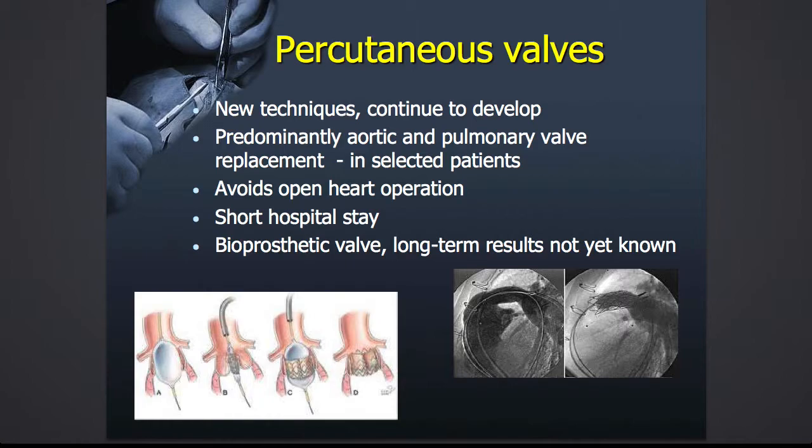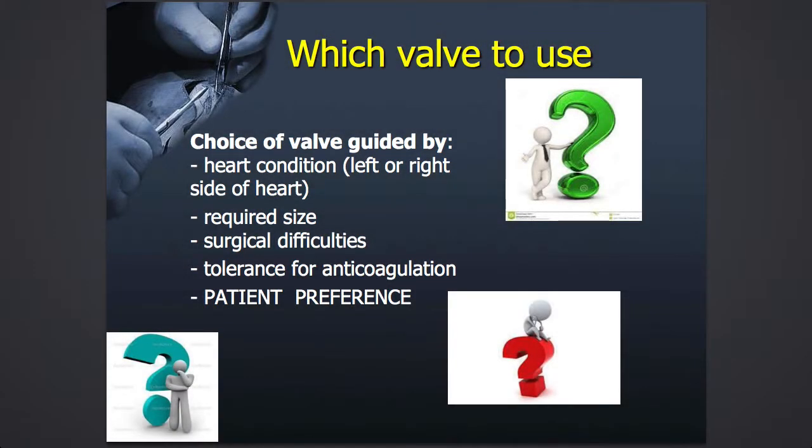So which valve to use? The choice of valve is guided by the heart condition and the left or right side of the heart. Mechanical valves need less anticoagulation if put on the left side; bioprosthetic valves have much better longevity if put on the right side. Generally, in a patient in whom we think has a long life ahead and where we would expect a bioprosthetic valve to wear out, we would put a mechanical valve on the left side and a bioprosthetic valve on the right side of the heart.